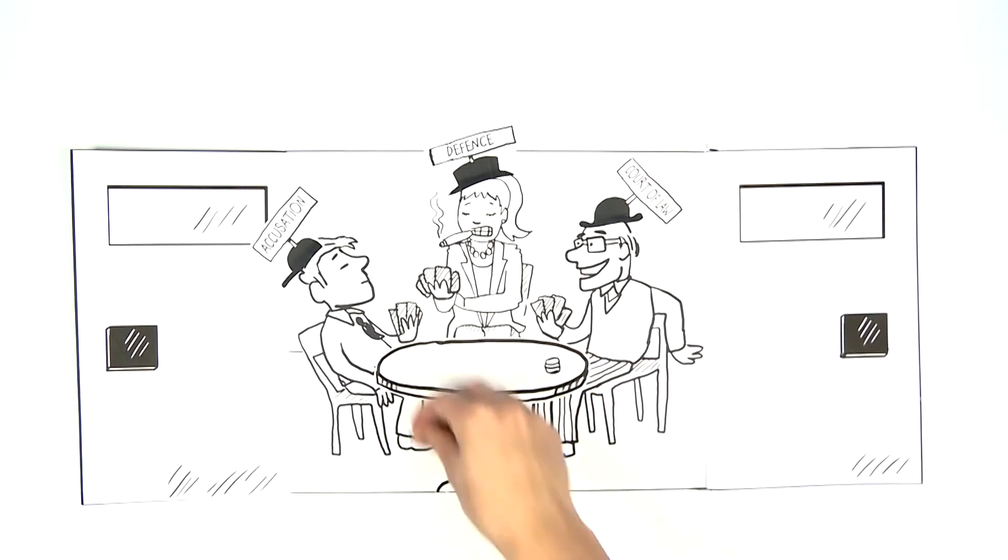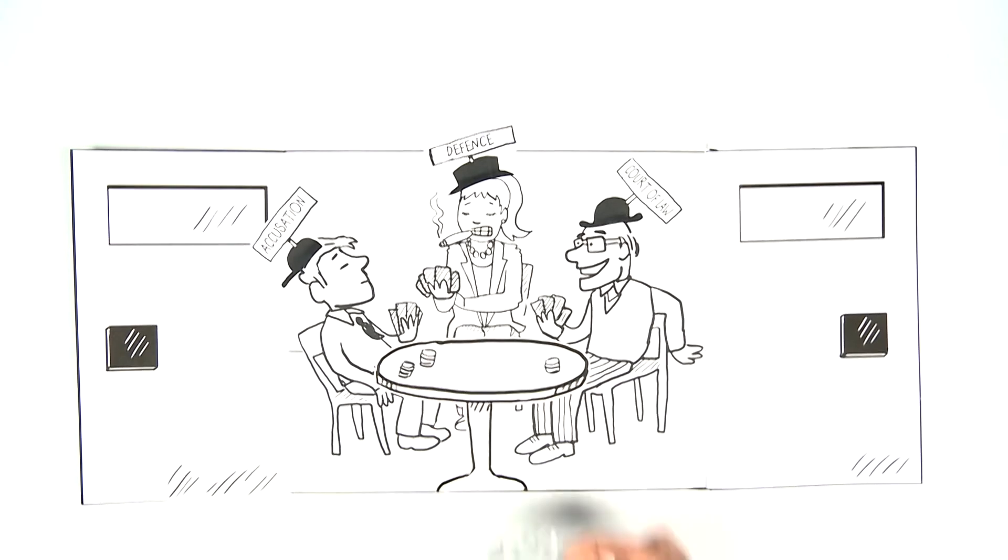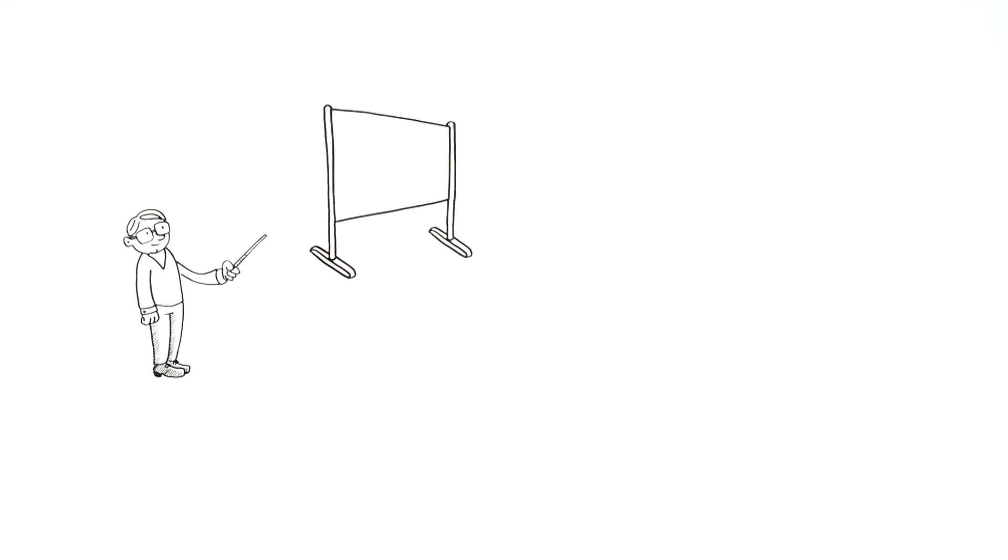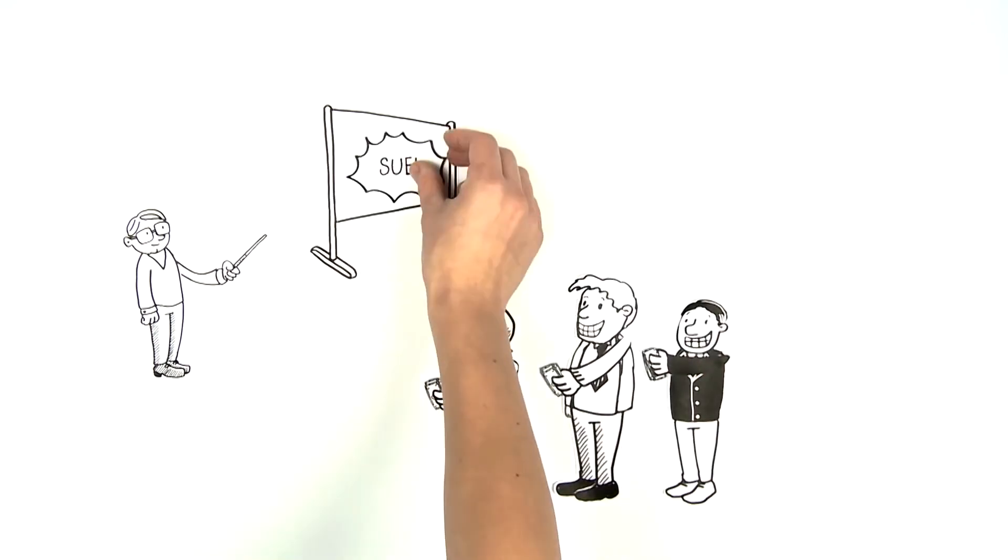Throughout, the arbitrators are earning big sums. One thousand dollars per hour is not unusual. In the background, their law firms lobby corporations to sue as often as possible, or help them establish subsidiaries in certain countries so they can file yet more ISDS lawsuits.